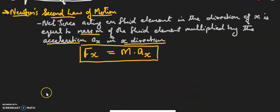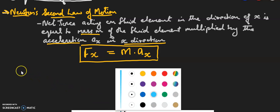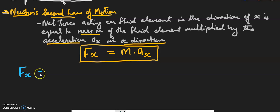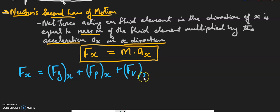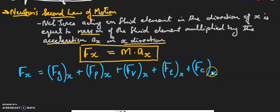Including all these forces in the equation of motion, the net force in the x direction becomes: Fx = Fg(x) + Fp(x) + Fv(x) + Ft(x) + Fc(x). This is the general equation of motion representing the summation of gravity, pressure, viscous, turbulence, and compressibility forces.